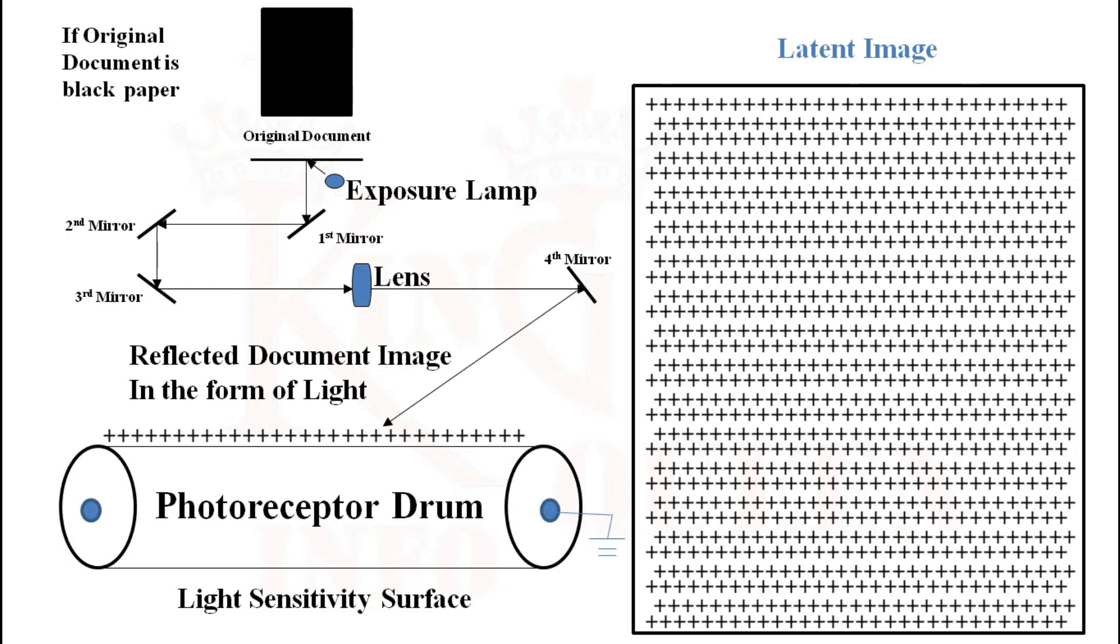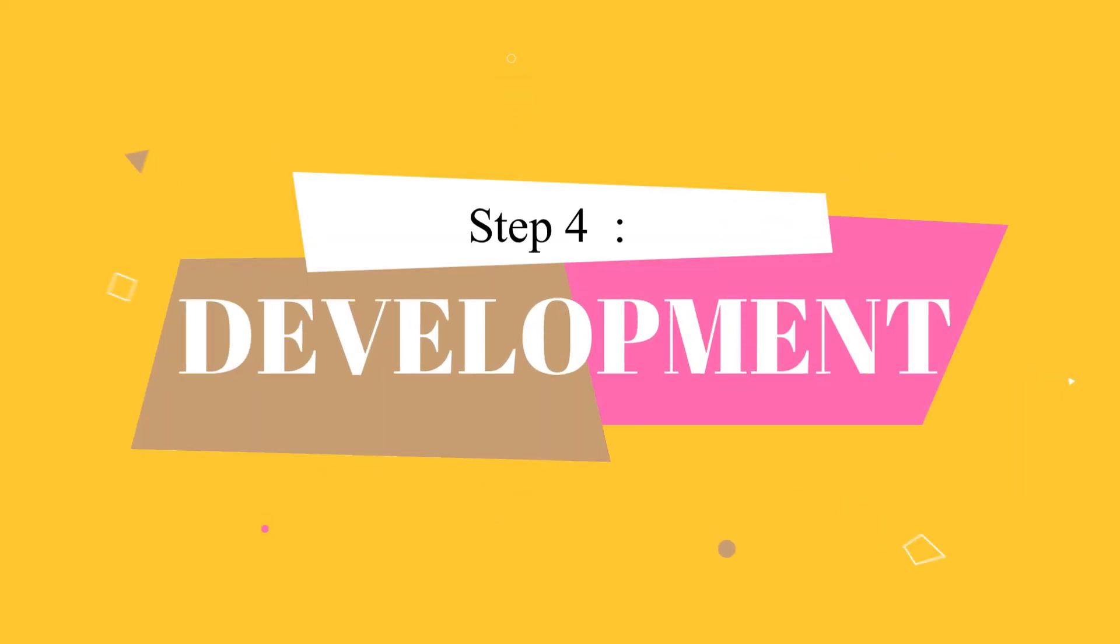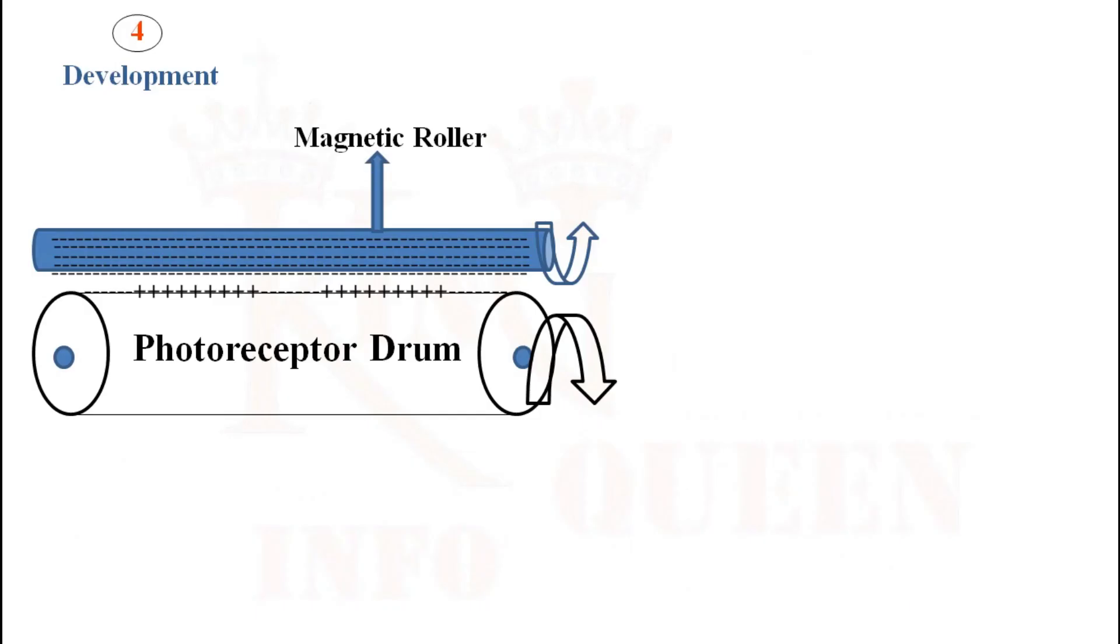Step 4: Development. In this step, the charged latent image is developed with the help of toner. Wherever charge is there on the photoreceptor, the negatively charged toner is attracted and gets stuck on the same.